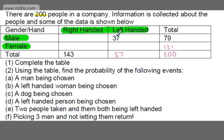We've got 37 left-handed males, so 37 from 57 gives me 20 left-handed females. Then 121 minus 20 gives 101 right-handed females. And 143 minus 101 gives 42 right-handed males. Checking the rows: 42 and 37 is 79; 101 and 20 is 121; 143 and 57 is 200; and 79 and 121 is 200. So we've completed the table.